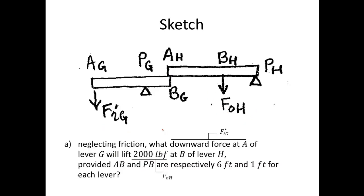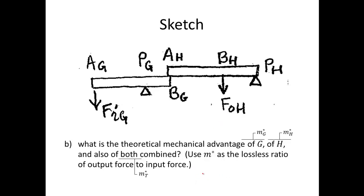Here's the first type of problem — there will be four parts. Neglecting friction, what downward force at A of lever G will lift a 2,000 pound load at point B of lever H? The output force at H equals 2,000 pounds, given that distances AB and PB for each lever are six feet and one foot respectively. The second problem asks for the theoretical mechanical advantage of lever G and lever H individually, and then combined.